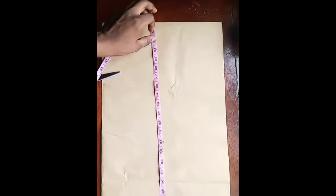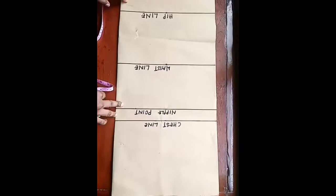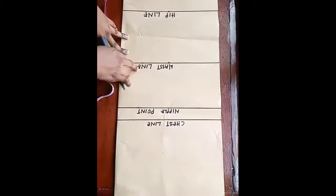Then on here, at this point, I'll be taking out my nipple point, which is 10.5. So I'll be drawing my horizontal measurements. I've drawn out my horizontal line and I'm taking this my chest line, nipple point, waist line, and my hip line.